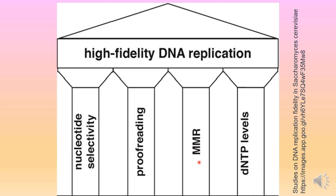In mismatch repair, the wrong nucleotides that have entered can be removed. A process of methylation occurs in the parental strand, and that is how the parental strand can be differentiated from the newly growing strand. The dam methylase enzyme is active here. The last feature is that sufficient levels of deoxyribonucleotides must be present. All four aspects make DNA replication a process of high fidelity and accuracy, maintaining genetic integrity from one generation to the next.